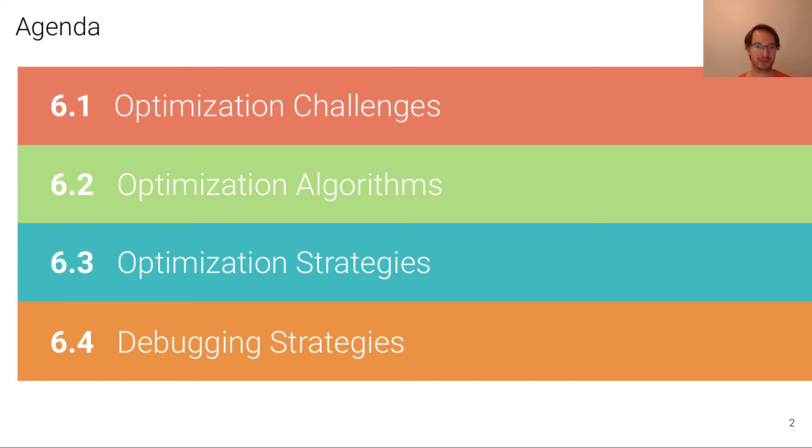This lecture is structured into four units. In the first unit we're going to talk about challenges that often arise during optimization. In the second unit, which is the core of this lecture, we're going to discuss optimization algorithms that go beyond simple gradient descent or stochastic gradient descent. In the third unit we're going to discuss several common optimization strategies that are useful for getting better performing models. And finally, what is also very important in deep learning is that many things can go wrong, so it's important to have efficient strategies for debugging the deep learning models that we develop.